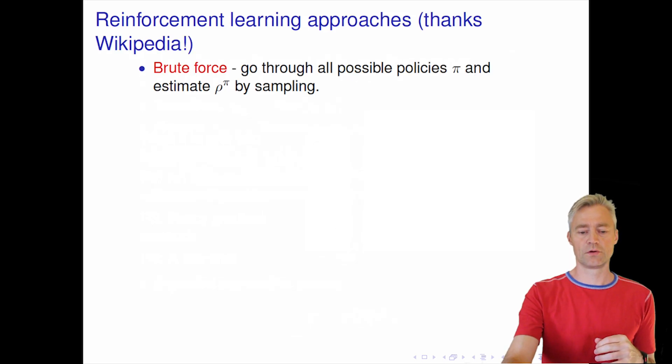There are several ways to design systems to come up with good policies. You can think about a brute force way of doing this. This is simply going through all possible policies and then estimate this expected cumulative reward by sampling the realizations, rollouts of the system.